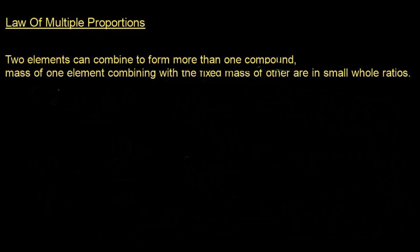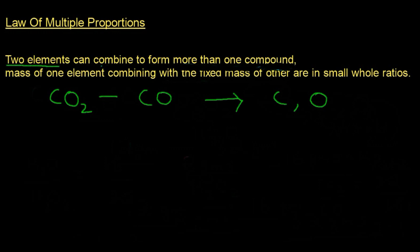Let us take some examples. The first example is carbon dioxide and carbon monoxide. Two elements can combine to form more than one compound — the two elements here are carbon and oxygen. These two elements are combining in different ratios to form more than one compound: carbon dioxide and carbon monoxide. Note that their physical and chemical properties are totally different even though their core elements remain the same. We need to find the mass of each element in each compound.